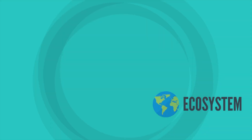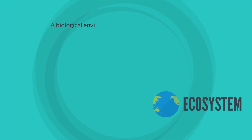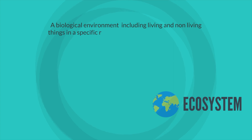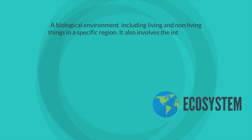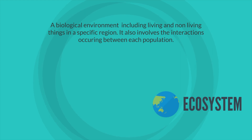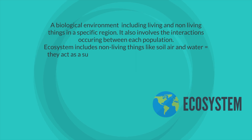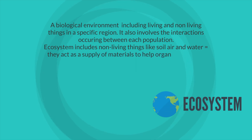Lastly, we have the ecosystem, which is a biological environment including living and non-living things in a specific region. It also involves the interactions which occur between each population. Ecosystems include non-living things like soil, air, and water, which act as a supply of materials to help organisms survive and reproduce.